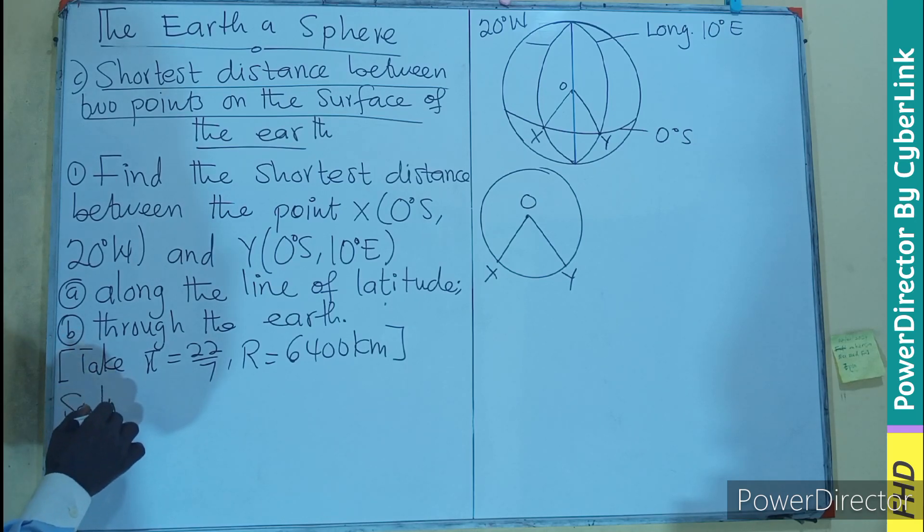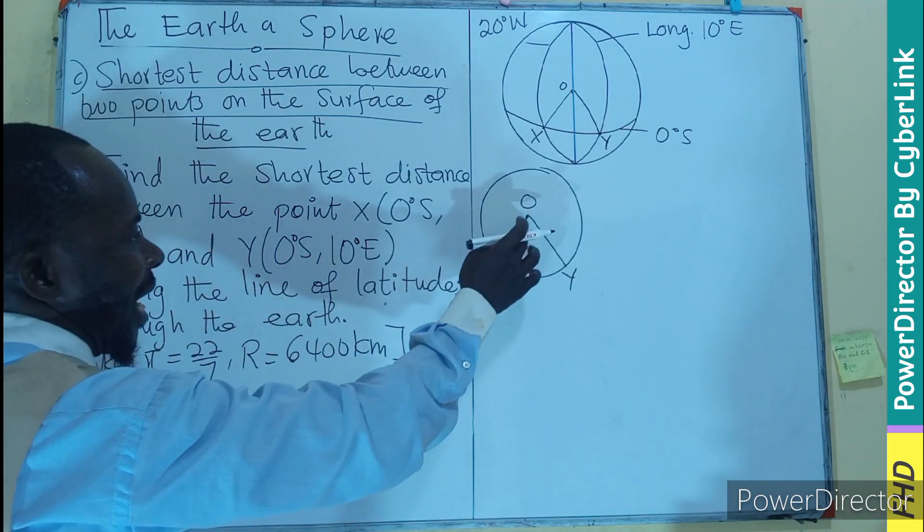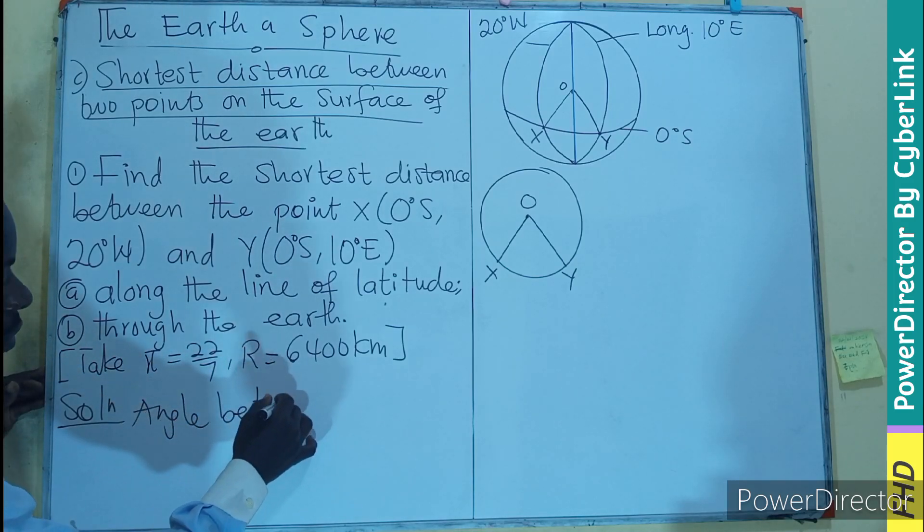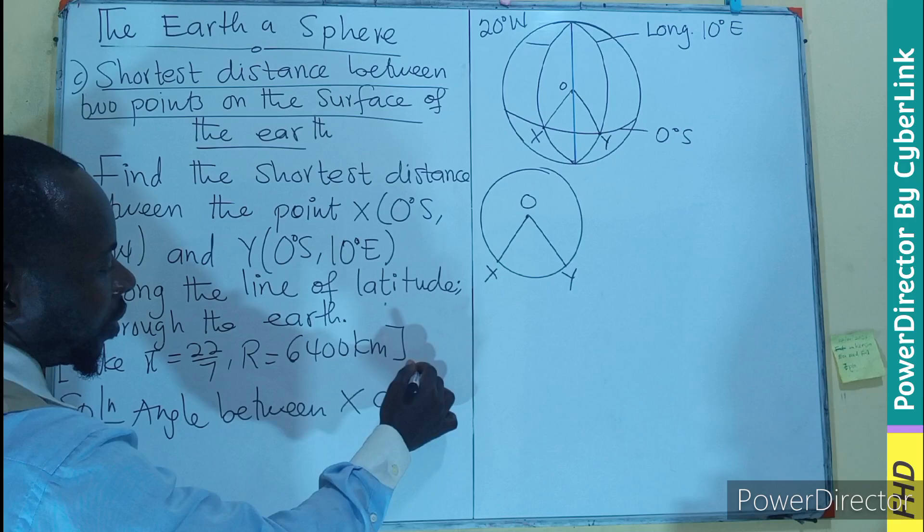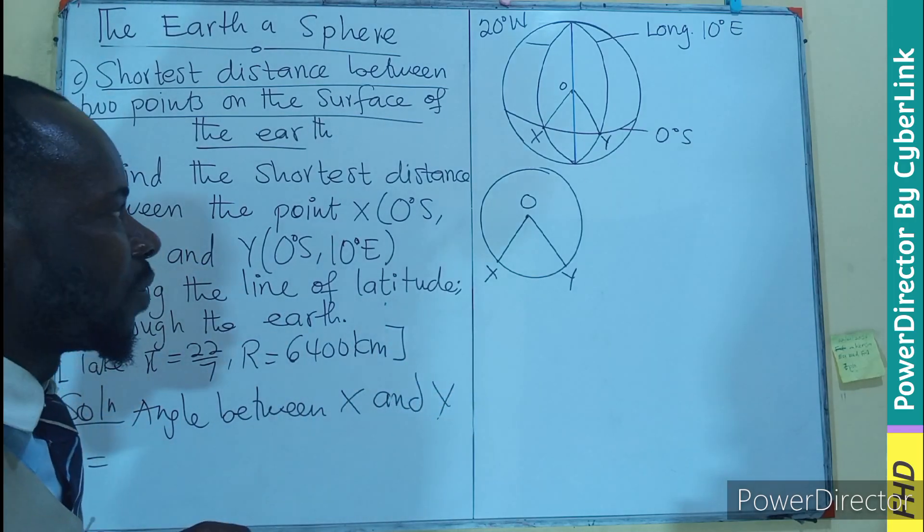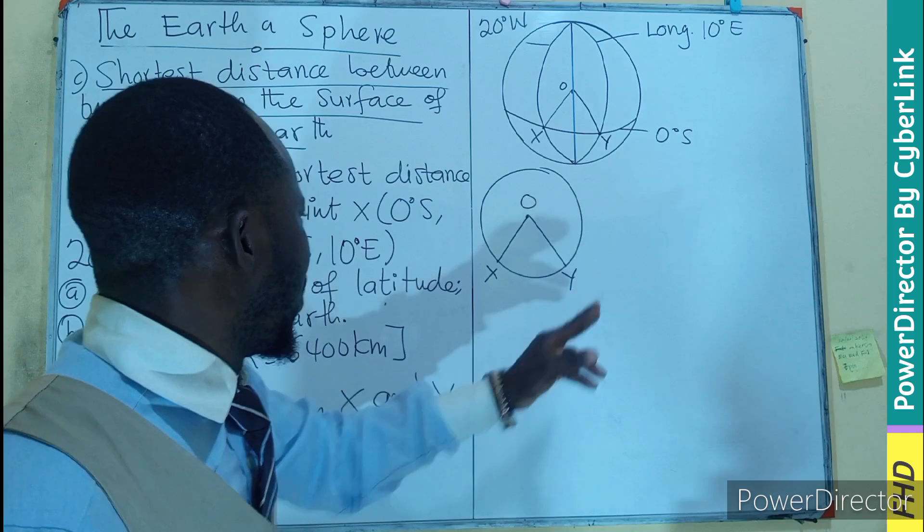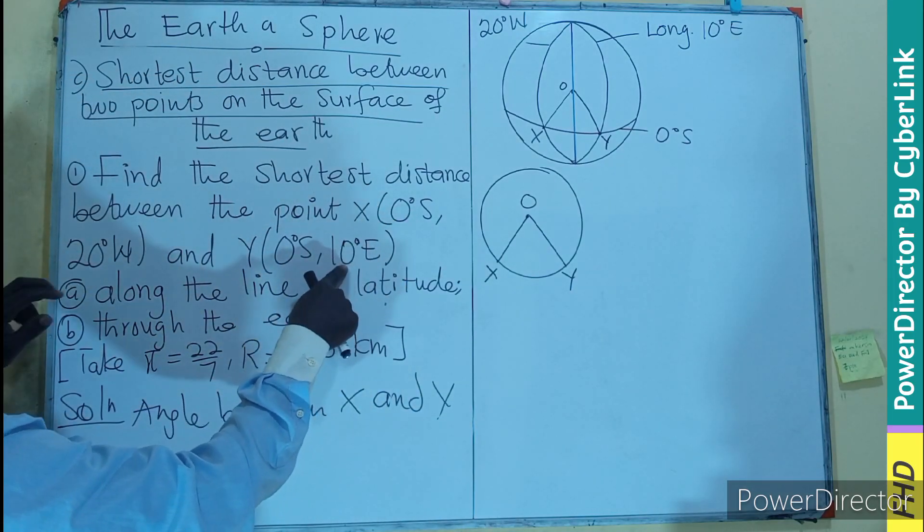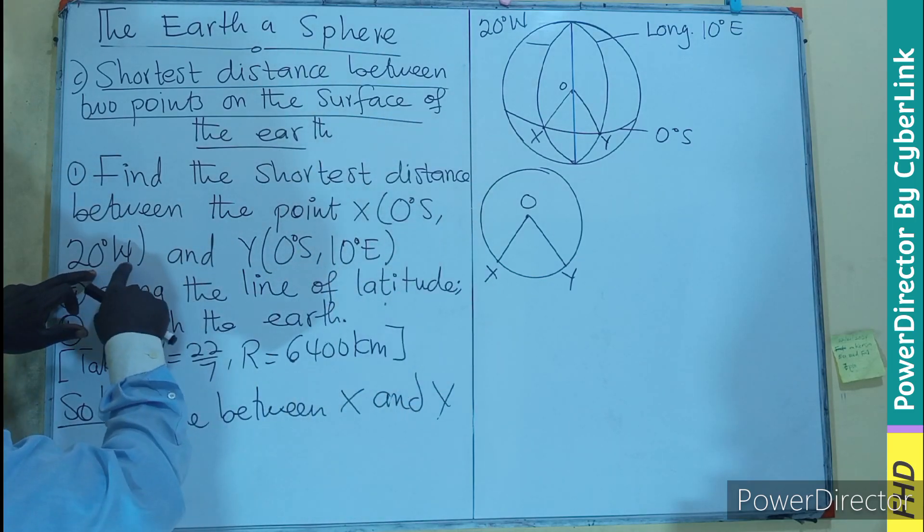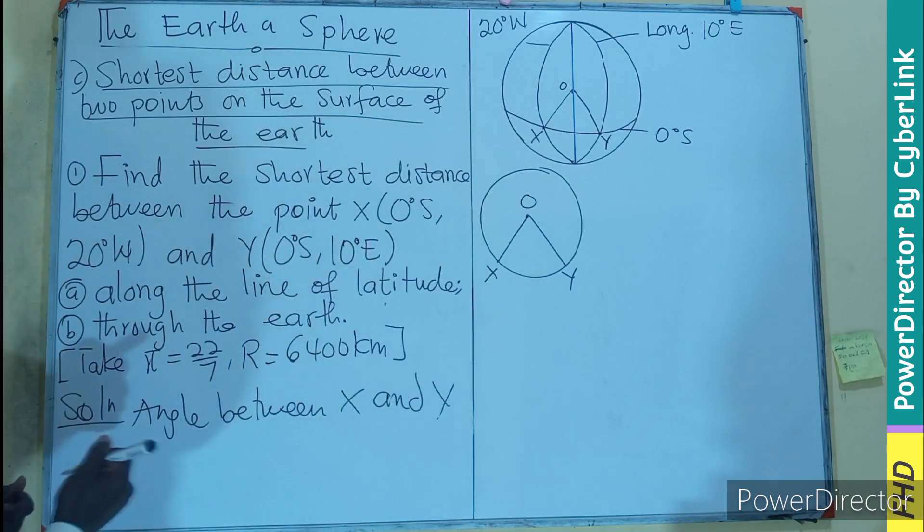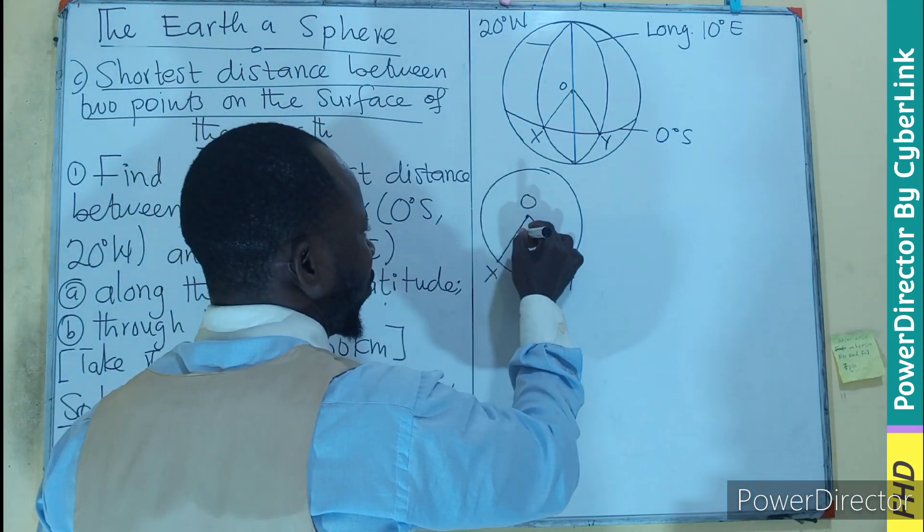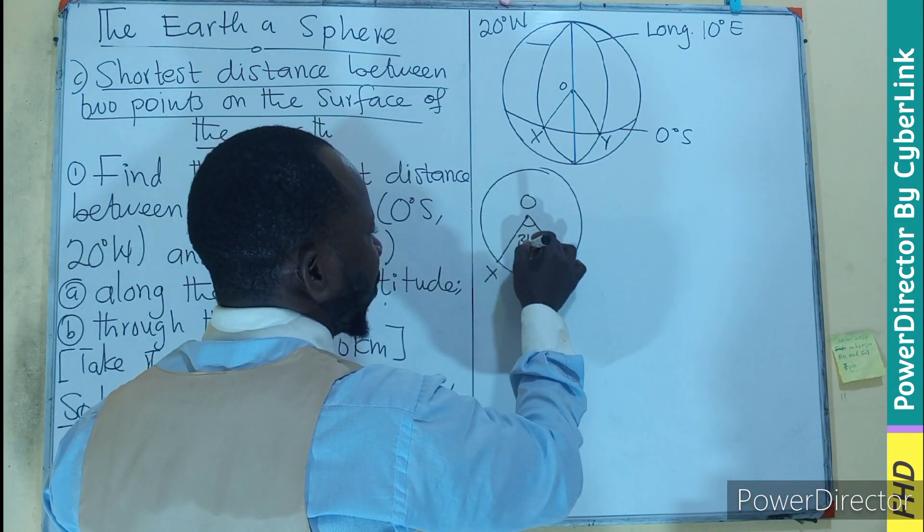Remember, we know that if I'm asked to find an angle, the angle between X and Y is going to be calculated as, you can see the latitudes are the same, so we ignore the latitude. We are picking the longitude. And they are on the opposite sides, west and east. So we add 20 degrees plus 10 degrees, and that gives us 30 degrees. So the angle here is going to be 30 degrees.